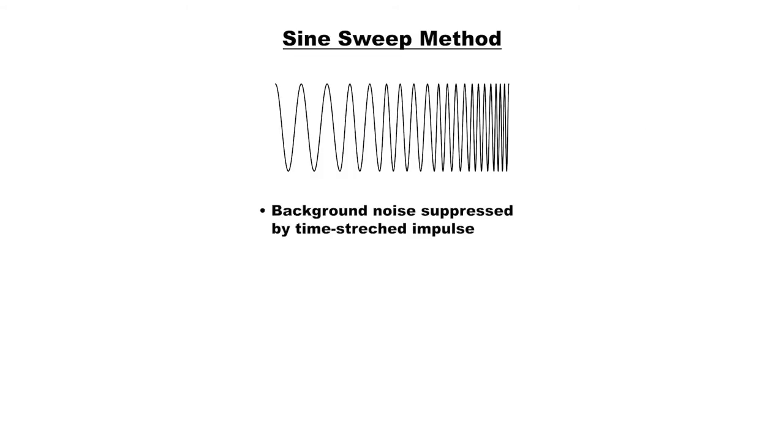To sum up, the background noise is suppressed by using a time-stretch impulse, because you get more acoustic power in the signal. Instead of one, you play thousands of samples. And the distortion is suppressed by the deconvolution method. Thereby, you have a really clean signal and accurate measurements.